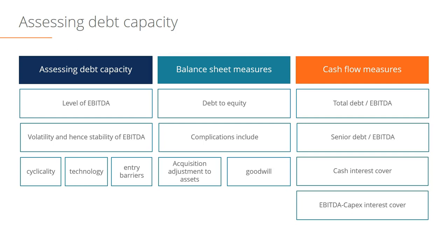At the end of the day, lenders want comfort that the amount of cash flow generated from the business can easily cover the interest expense and ultimately cover the principal repayments that are required as well. Typically lenders will look at a combination of balance sheet measures and cash flow measures when assessing a company's total debt capacity.